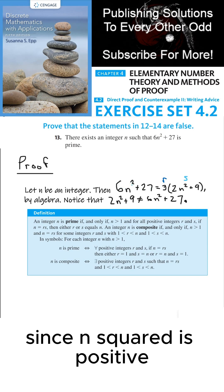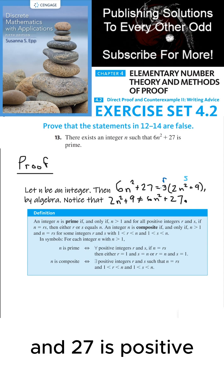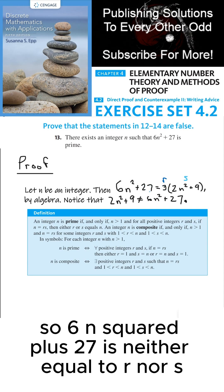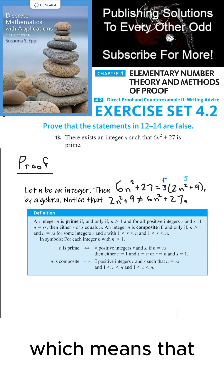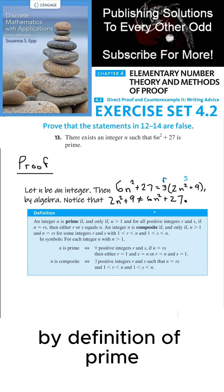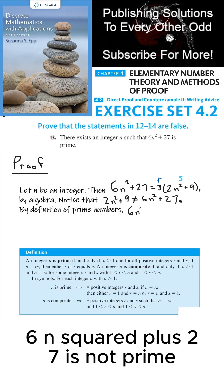Since n squared is positive, 6 would be positive, and 27 is positive, there's no way that could equal 3. So 6n squared plus 27 is neither equal to r nor s, which means that by definition of prime, 6n squared plus 27 is not prime.